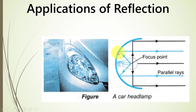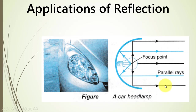If instead of a convex mirror we use a concave mirror — as we do in the headlights of a car — the bulb emits light in random directions. When it hits the concave mirror, the mirror makes the rays parallel, so the light from the headlamp appears as a beam of parallel rays going outward. This is another application of reflection.